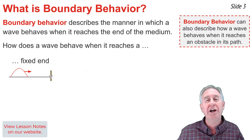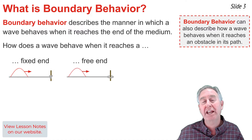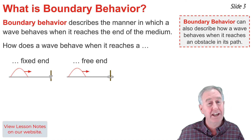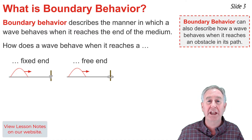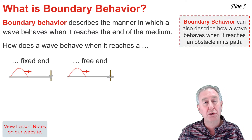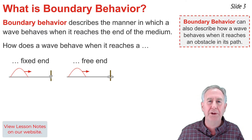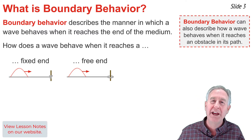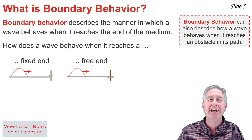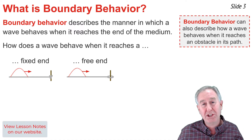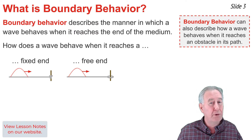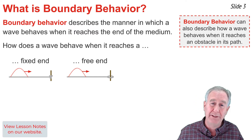We will also be investigating the behavior of a pulse that reaches a free end. An example of a free end might be the same rope looped around the pole in such a manner that when the pulse reaches the end, that last segment of rope is capable of vibrating up and down.